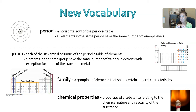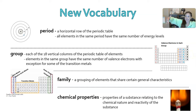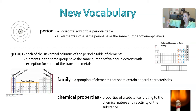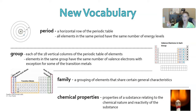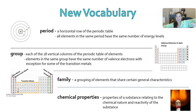Elements with eight valence electrons are full — they have nice, happy, full electron shells and don't really want to react. They're stable, not trying to find someone to bond with. Elements with fewer valence electrons are much more reactive. So when we talk about chemical properties, we're talking about how reactive or non-reactive an atom might be.